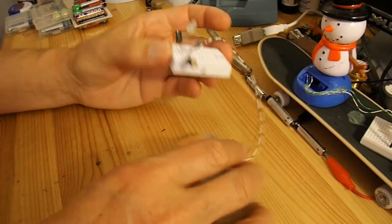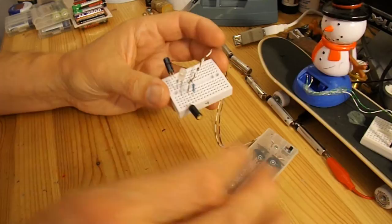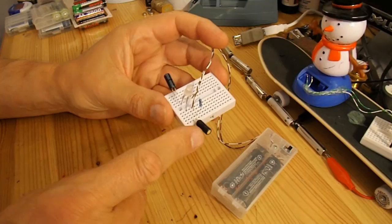So we've got two double A batteries with an on-off switch, single LED, 1K resistor, and two tilt switches.